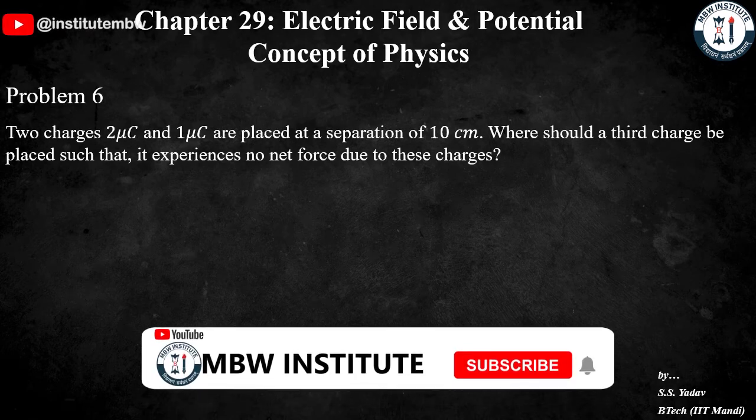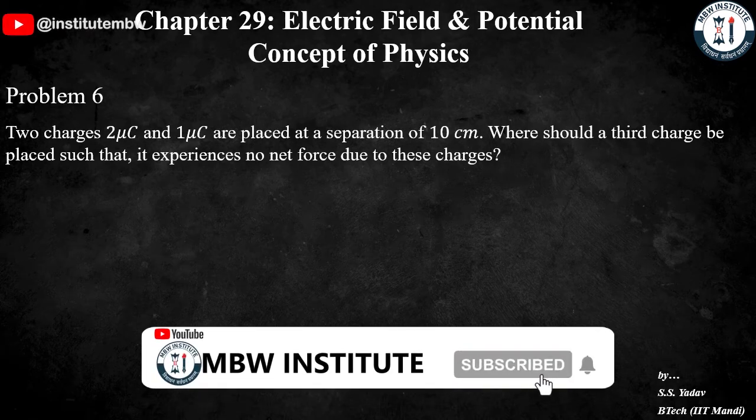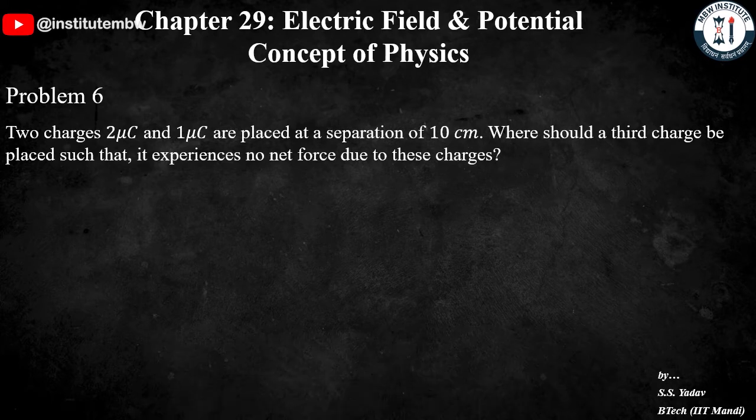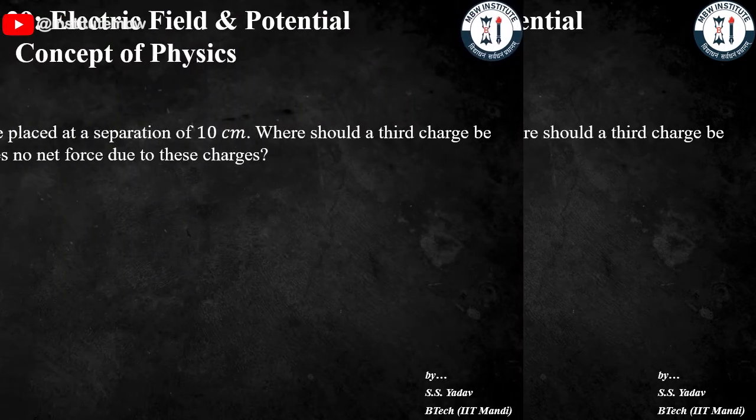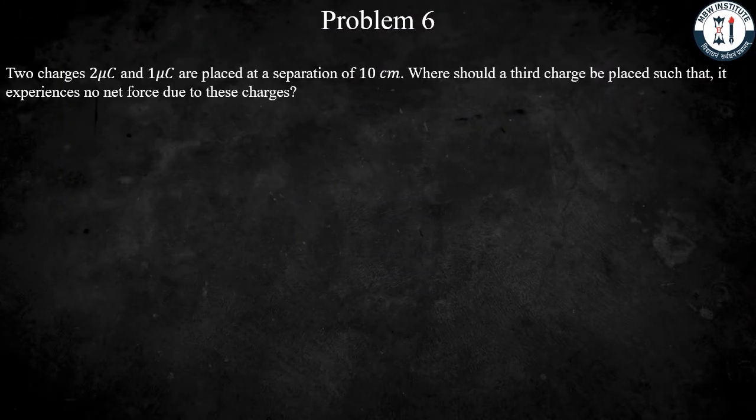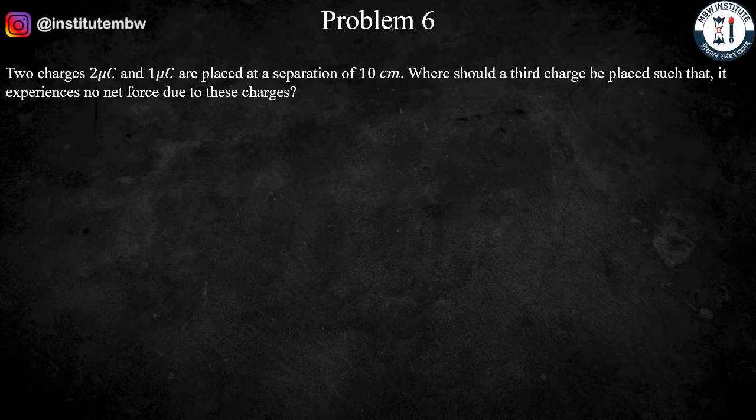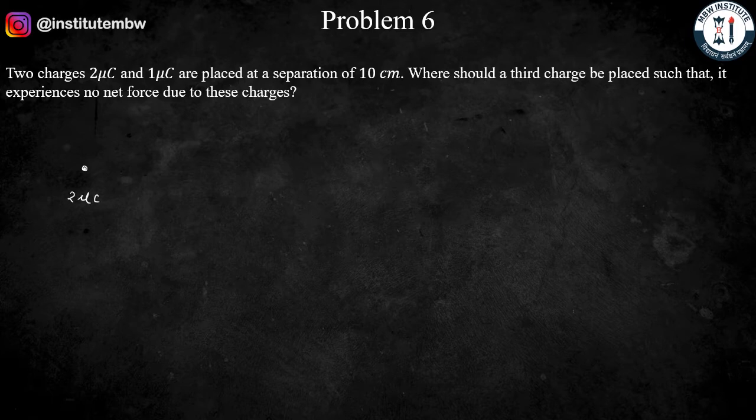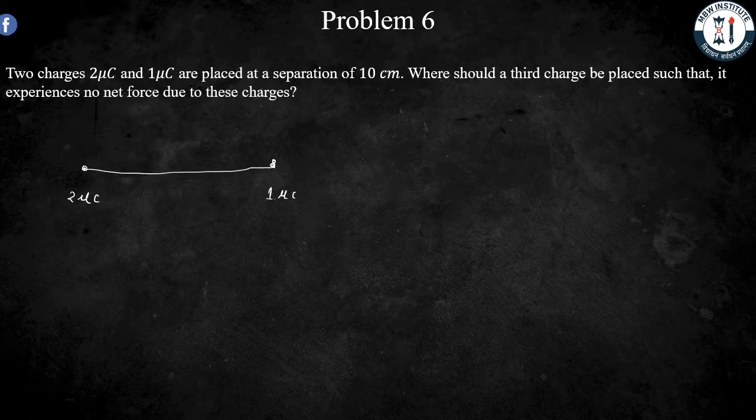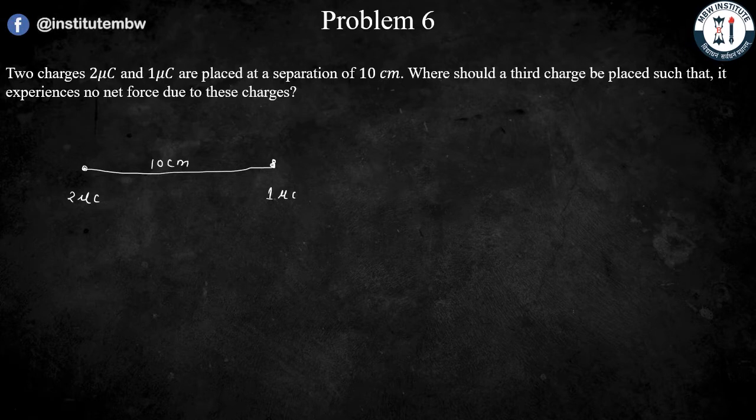In this video we will solve Problem 6. Hit the pause button and try this problem on your own, then please come back and see how I do it. Let's get started. Two charges, 2μC and 1μC, are placed at a separation of 10 centimeters. So this is 2μC and this is 1μC, that is microcoulombs, and their separation is 10 centimeters.